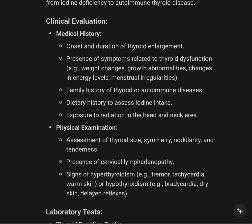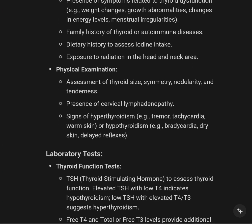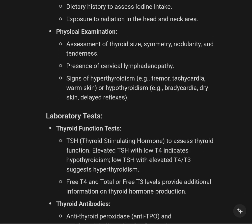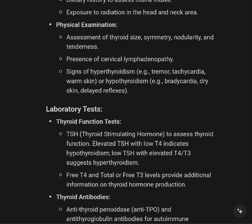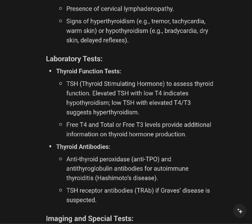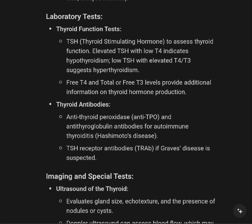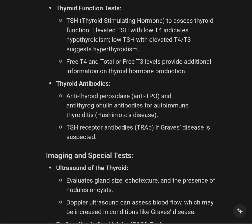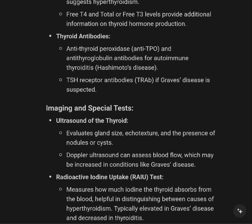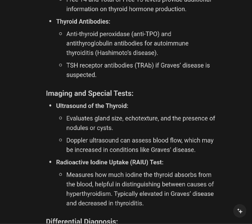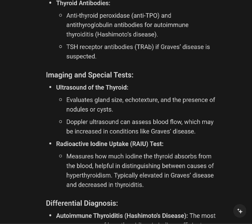Clinical evaluation includes medical history — duration, presence of symptoms of thyroid dysfunction, and family history of thyroid disease, exposure to radiation. Physical examination includes assessment of thyroid size, presence of lymphadenopathy, signs of hyperthyroidism or hypothyroidism. Laboratory tests: TSH elevated with low T4 suggests hypothyroidism; free T4 and total or free T3 provide additional information. Thyroid antibodies — antithyroid peroxidase, anti-TPO, and antithyroglobulin — for autoimmune thyroiditis, Hashimoto's disease. TSH receptor antibody — TRAB — if Graves' disease is suspected.